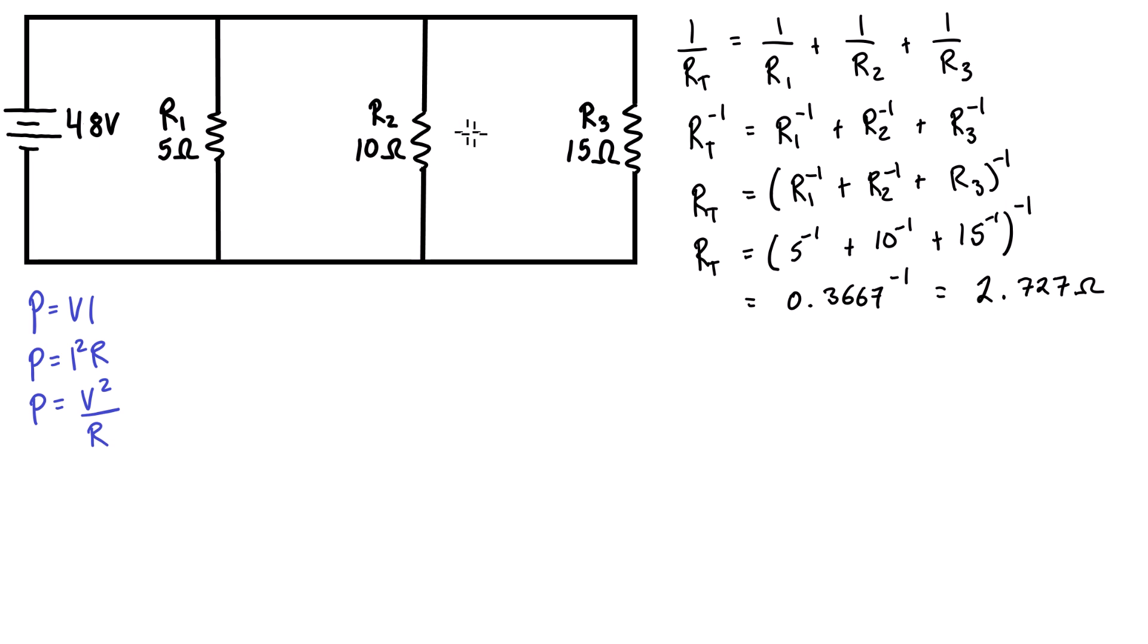What we want to do when we're finding the power dissipation in a resistor is identify which of these two variables we have and roll with that. In this case, we actually know the voltage drop across each one. It's going to be 48 volts because this is a parallel circuit, so the voltage drop will be the same as the source voltage across each one.